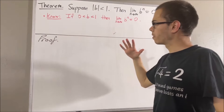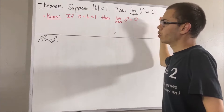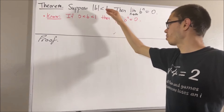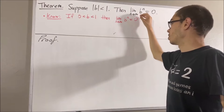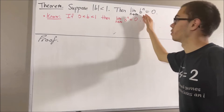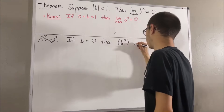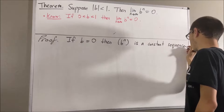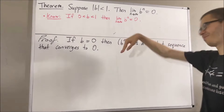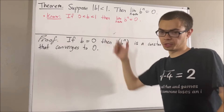So now let's get into proving this theorem. One possibility is that b is equal to 0, and if b is equal to 0, then our sequence is just a constant sequence of zeros. So of course it converges to 0. That case is trivial. So now let's suppose b is not equal to 0.